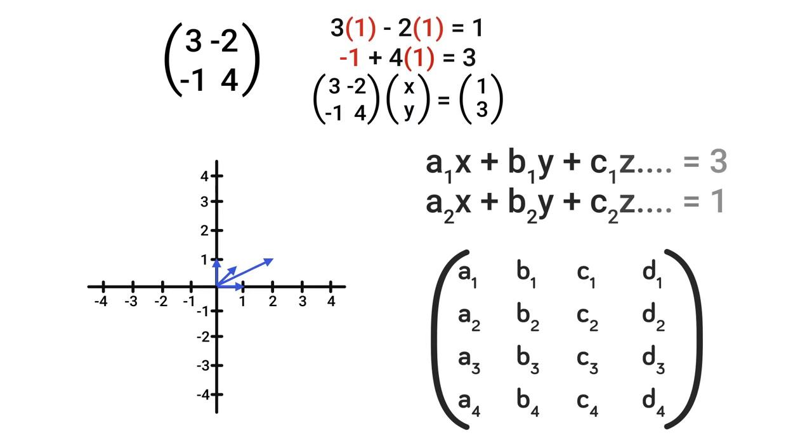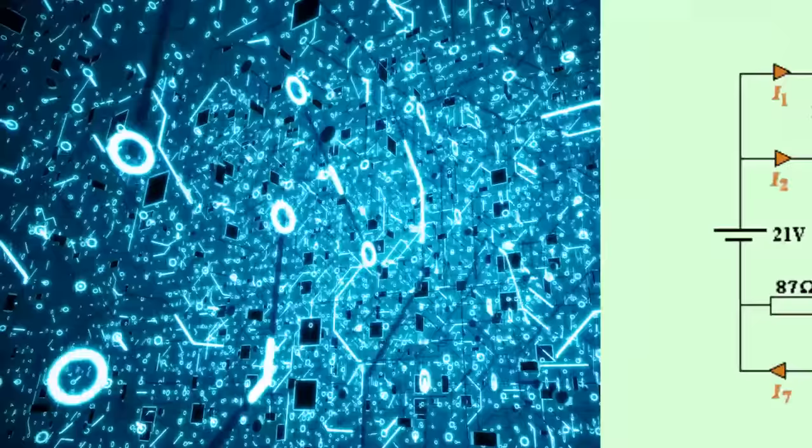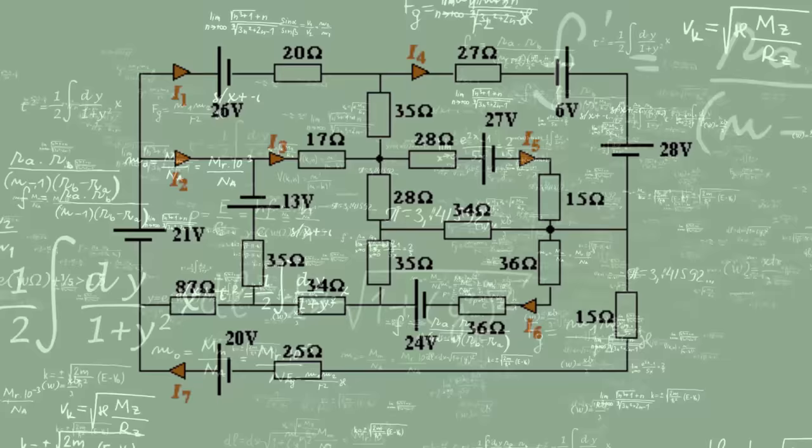The reason matrices are used in circuits and electronics, for example, is because these can be represented by linear equations in which all the voltages and currents are the unknown variables. When the circuits get hectic where we don't want to solve it by hand, we can just have a computer find an inverse matrix and we'll have our currents and voltages. But that's still not too exciting.